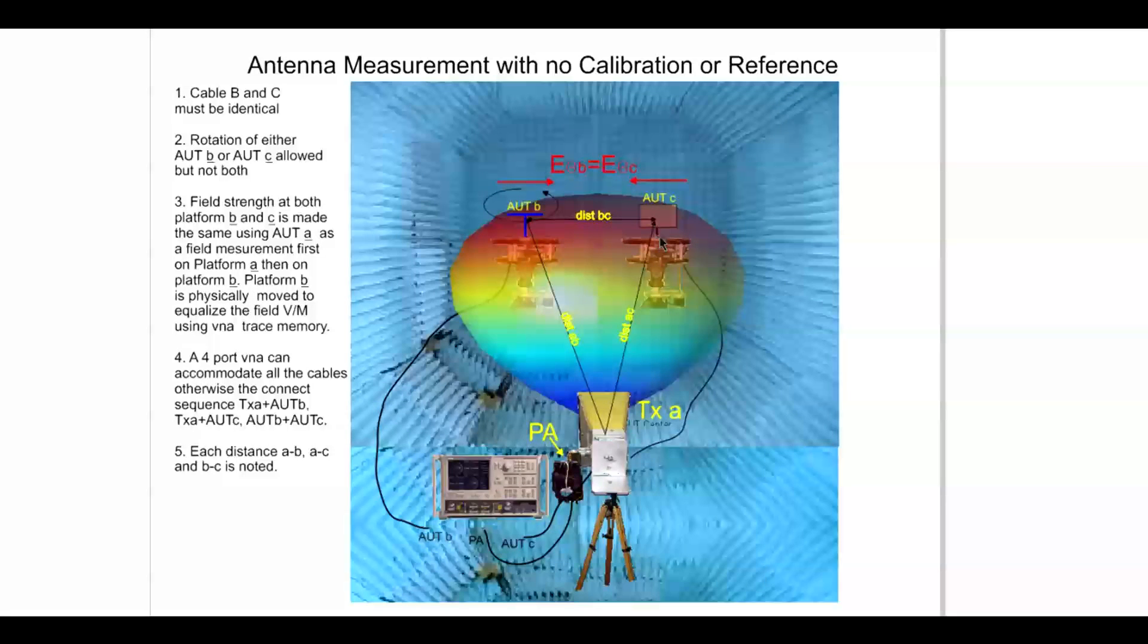To do this, we would measure the link gain from AUT A to B and we would record this in the VNA memory. In our case, we've used an Anritsu Lightning VNA. We would then remove the dipole AUT B and fasten it to AUT C to make the measurement once again.